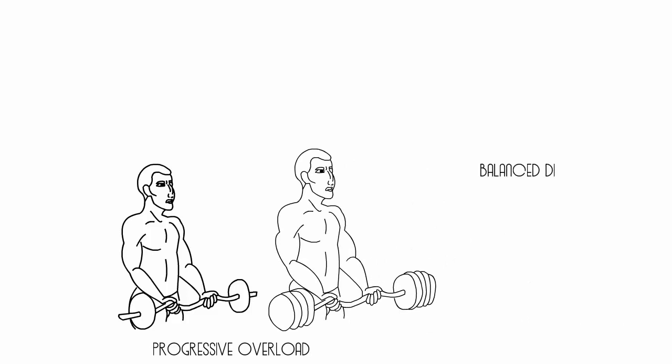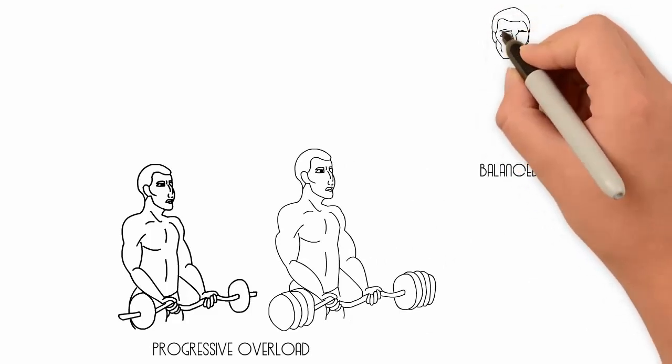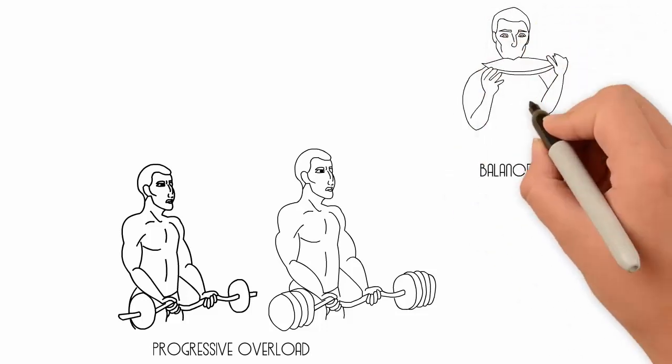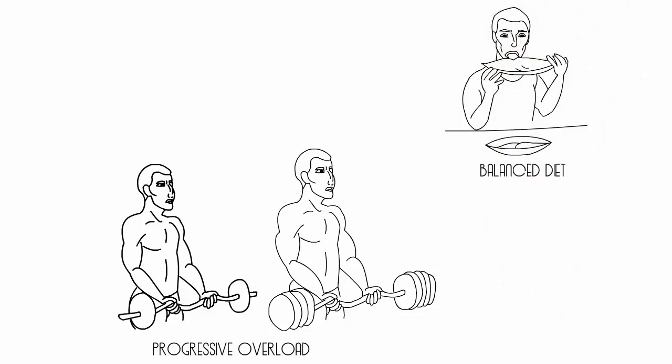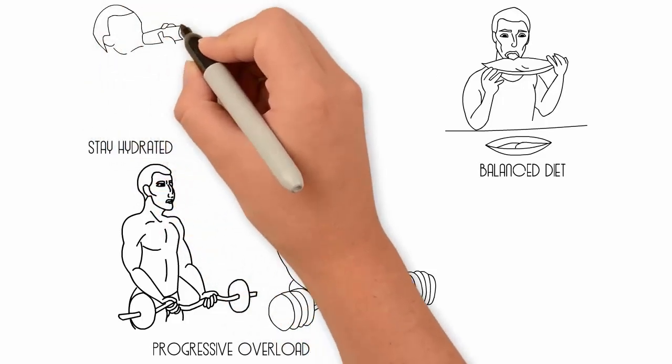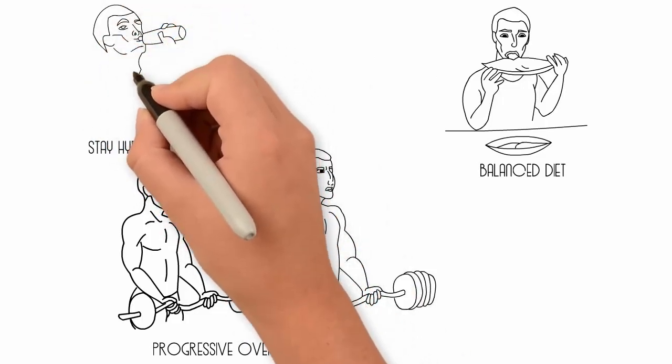Another thing you can do is eat balanced diets. Research has shown that eating a balanced diet can ensure you don't develop any nutrient deficiencies that may impair your body's ability to recover. Another thing you should do is stay hydrated because dehydration can impair your muscles' ability to repair itself and recover.